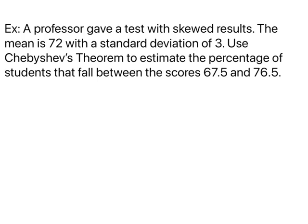A professor gave a test with skewed results. The mean is 72 with a standard deviation of 3. Use Chebyshev's theorem to estimate the percentage of students that fall between the scores 67.5 and 76.5. First of all, if I look at 76.5 and we know the mean is 72, how far away are we? We get 4.5.